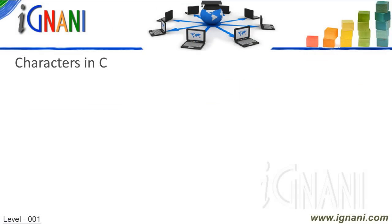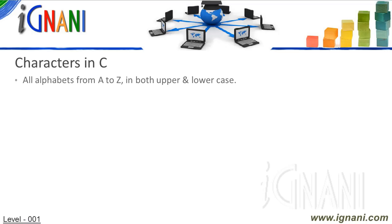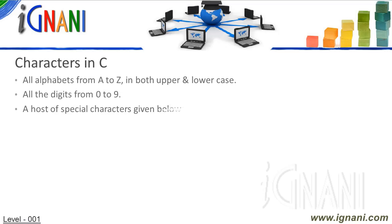Characters in C. When I say characters, I am referring to those alphabets, numbers and special characters that are accepted in C. All the alphabets from A to Z in both upper and lower case are accepted, the digits from 0 to 9, and a host of special characters as given below.